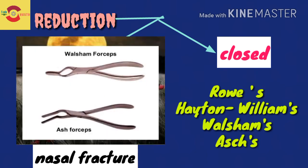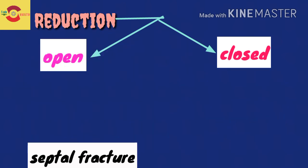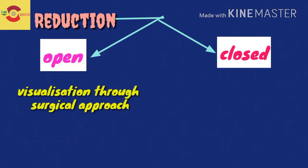Ash's forceps are used for septal fracture reduction. Open reduction involves reducing the fracture segments by directly visualizing the fragments through surgical approaches.